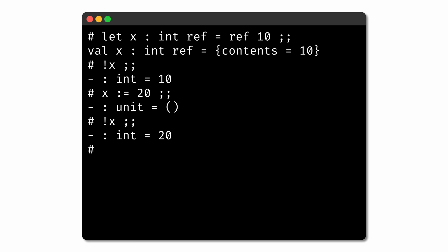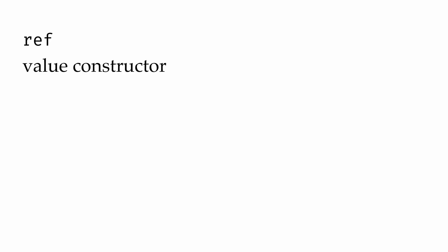To recap, we have three new operators for working with references. The first, the keyword ref, creates a new reference. Its type is alpha to alpha ref — it accepts a value of type alpha, stores that in a block of memory, and returns a reference of type alpha ref to that block of memory.